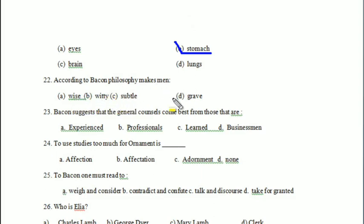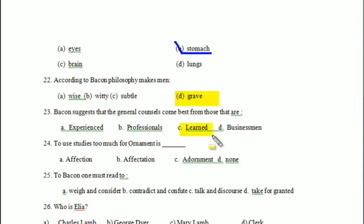According to Bacon, philosophy makes a man — wise, witty, subtle, or grave? Your answer is 'grave' (it can be 'deep' as well). Bacon suggests that general counsels come best from those who are — experienced, professionals, learned, or businessmen? Your answer is 'learned.' To use studies too much for ornament is — affection, affectation, adornment, or none? Your answer is 'affectation.'